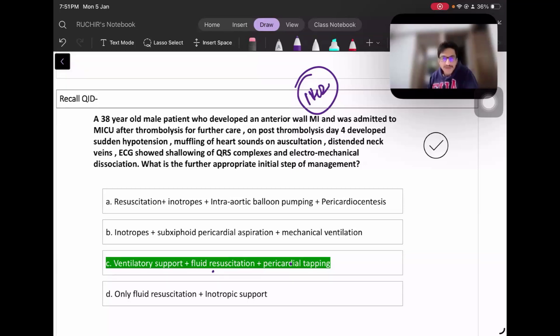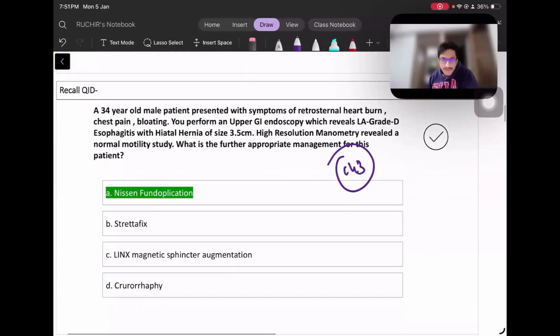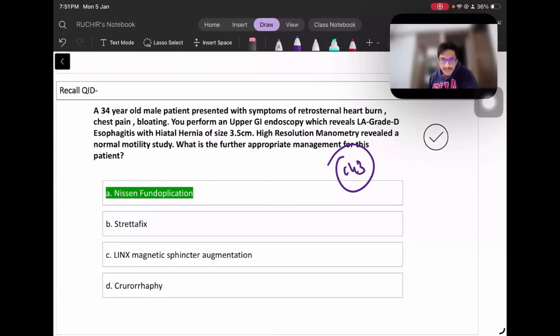Moving on to the next question about a patient with retrosternal heartburn. Esophagitis grade D with hiatal hernia. High-resolution manometry is suggestive of normal motility study. Best appropriate management in such patients with severe reflux and hiatal hernia is Nissen fundoplication. You don't go for Stretta, LINX, or cruroplasty - you go for Nissen fundoplication, which also narrows the hiatus if the patient has hiatal hernia.